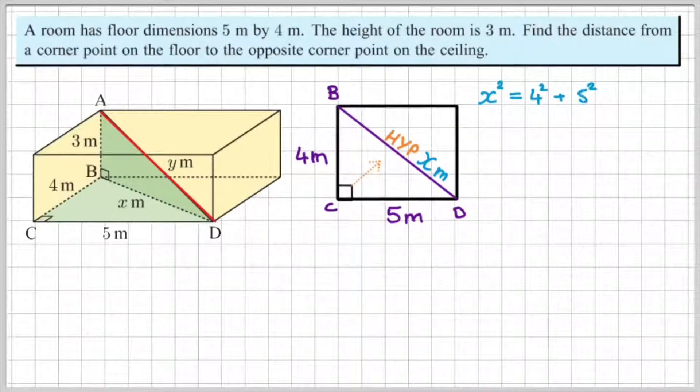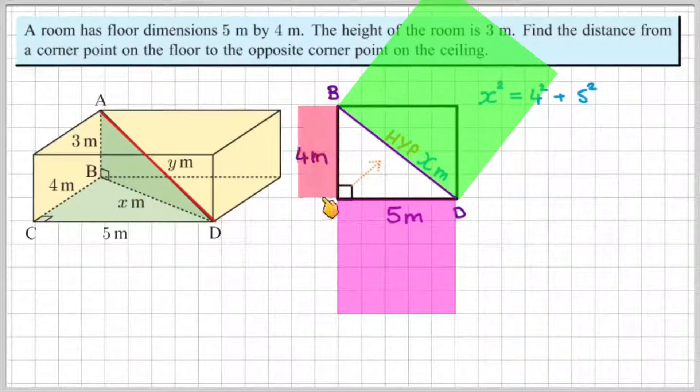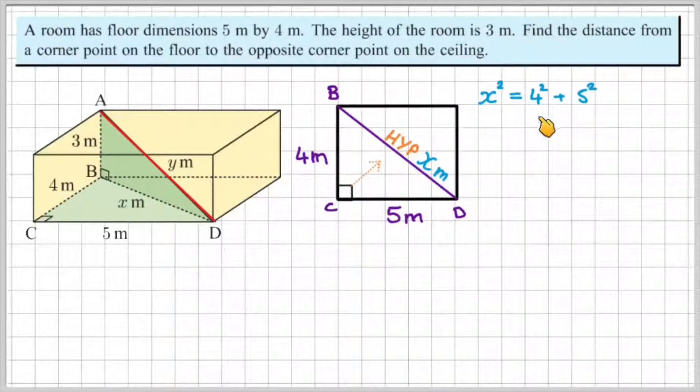So I would have x squared is equal to 4 squared plus 5 squared. Because I know from previous lessons that the square of the hypotenuse is equal to the sum of the squares of the two legs. So the square of 4 plus the square of 5 is equal to the square of the hypotenuse. In this case, it's x.